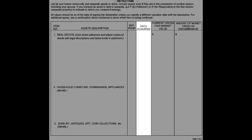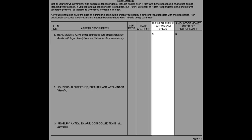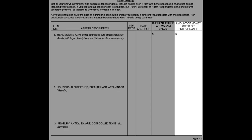The date acquired column is when you purchased or received an item. The current gross fair market value is the value of the property as of the date of filling out this paperwork. The amount of money owed or encumbrance is anything not fully paid off. Fill out item numbers 1 through 27.